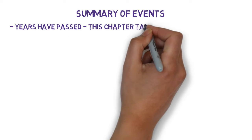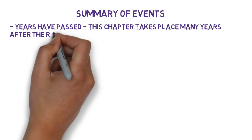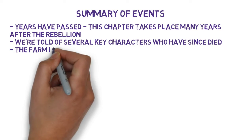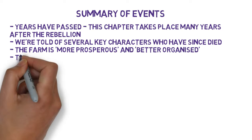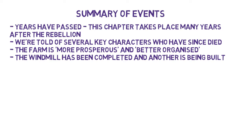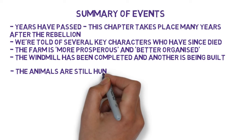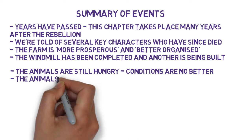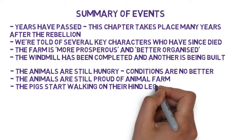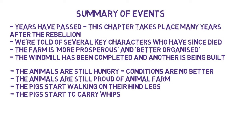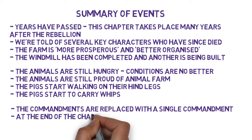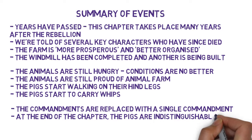In this chapter, years have passed. This chapter takes place many years after the rebellion. We're told of several key characters who have since died. The farm is more prosperous and better organised. The windmill has been completed and another is being built. The animals are still hungry — conditions are no better. The animals are still proud of Animal Farm. The pigs start walking on their hind legs and also start to carry whips. The commandments are replaced with a single commandment, and at the end of this chapter, the pigs are indistinguishable from the men.